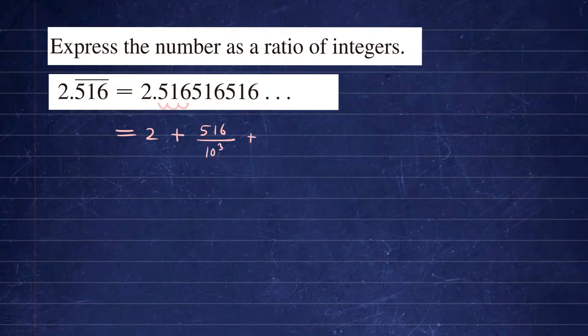Then the next repeated portion, it's going to be another 5, 1, 6. So that will be 516 over 10 to the 6th power. And then the next one, again, 516 over 10 to the 9th. So you start to see the pattern of how we're generating each term.